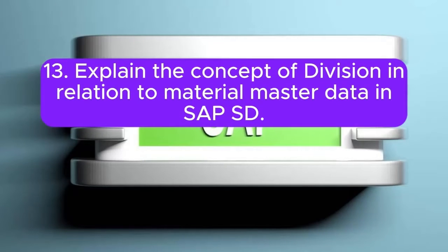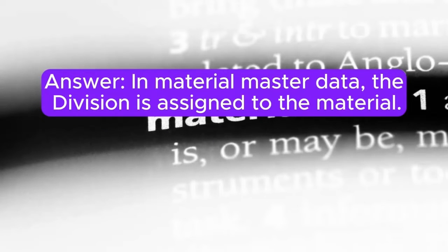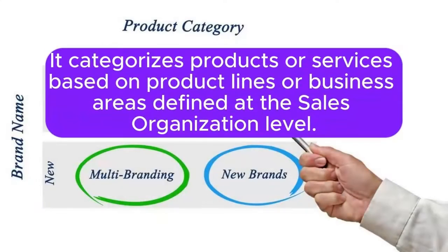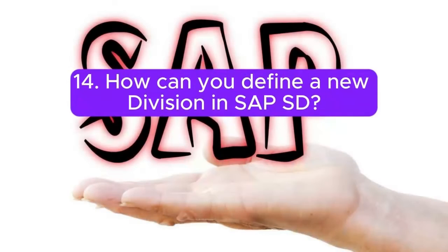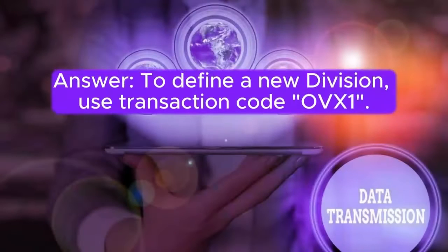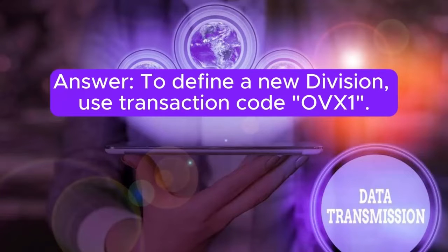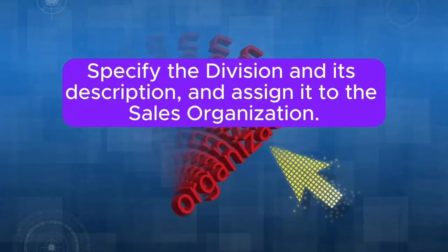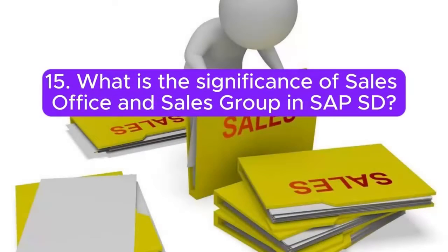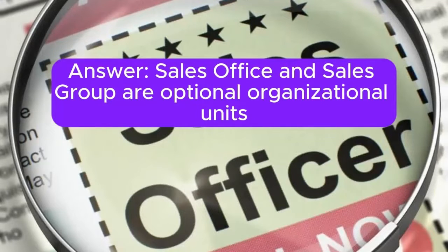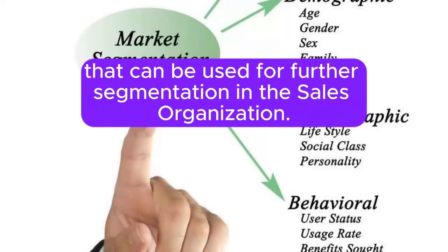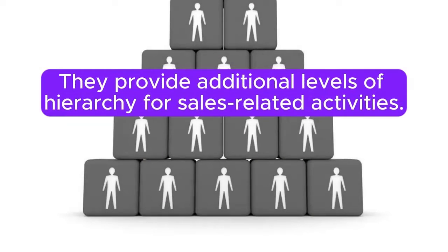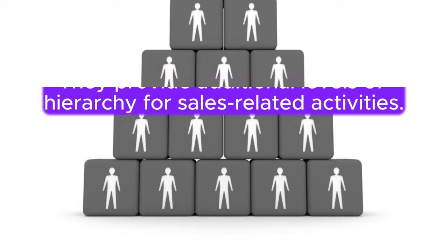Question 13: Explain the concept of division in relation to material master data in SAP SD. Answer: In material master data, the division is assigned to the material. It categorizes products or services based on product lines or business areas defined at the sales organization level. Question 14: How can you define a new division in SAP SD? Answer: To define a new division, use transaction code OVEX1. Specify the division and its description, and assign it to the sales organization. Question 15: What is the significance of sales office and sales group in SAP SD? Answer: Sales office and sales group are optional organizational units that can be used for further segmentation in the sales organization. They provide additional levels of hierarchy for sales-related activities.